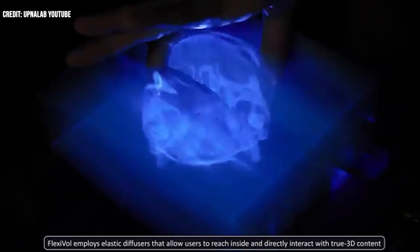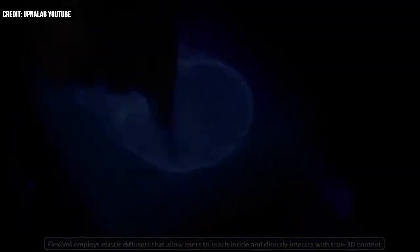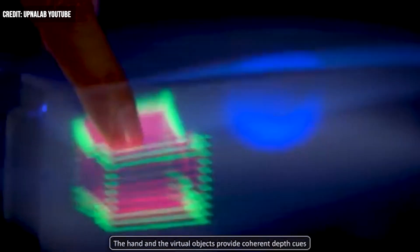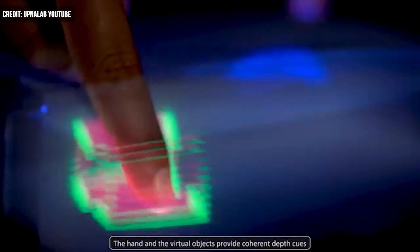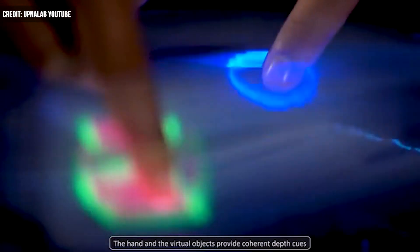The displays support the holograms through a diffuser. As a rigid, fast oscillating sheet, the displays allow thousands of images to be projected synchronously at different heights.